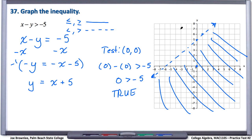If we would have chosen a point from above the line and plugged it in, we would have gotten a false statement. And by virtue of getting a false statement above the line, that tells us to shade below the line. Alright, so there's number 37. I'll see you at number 38.